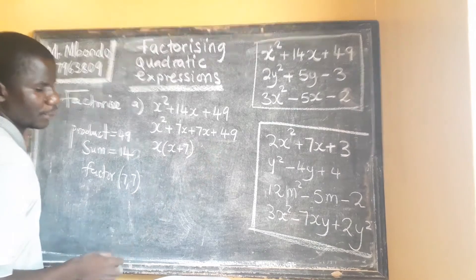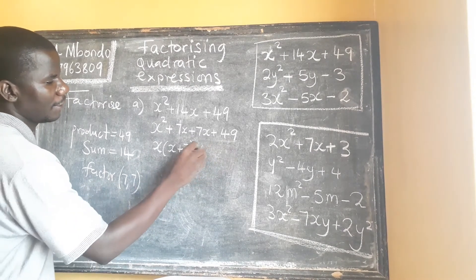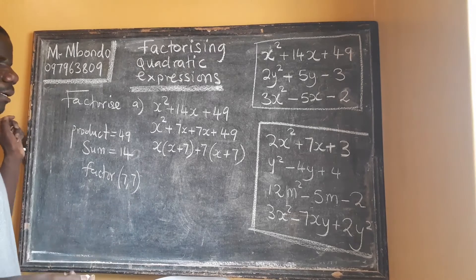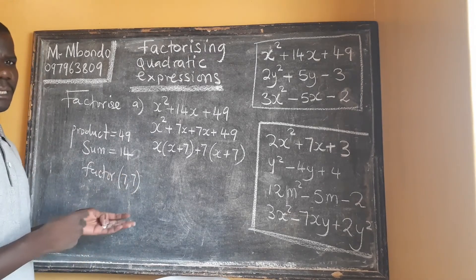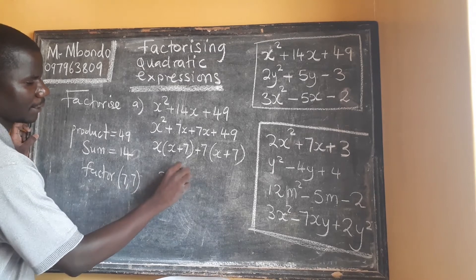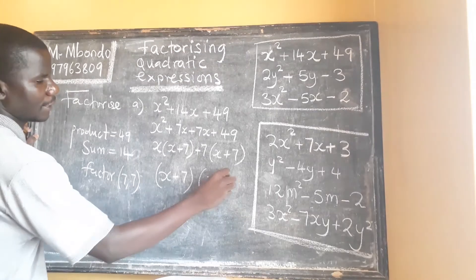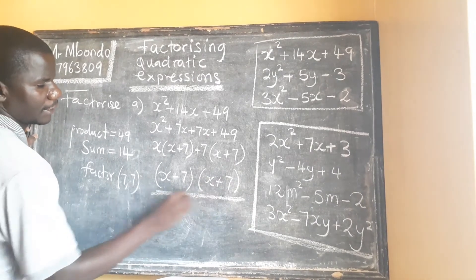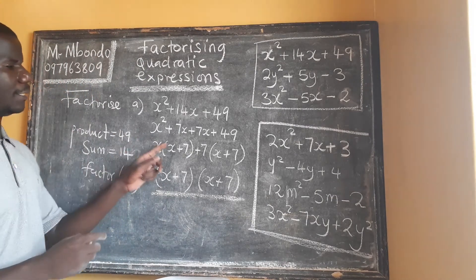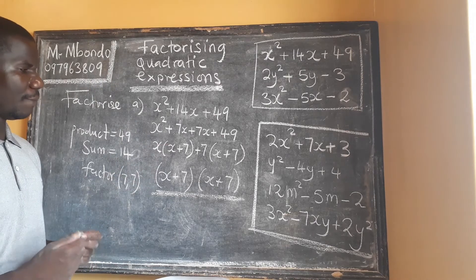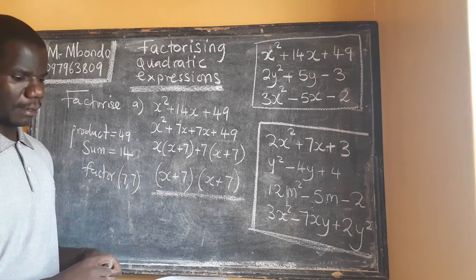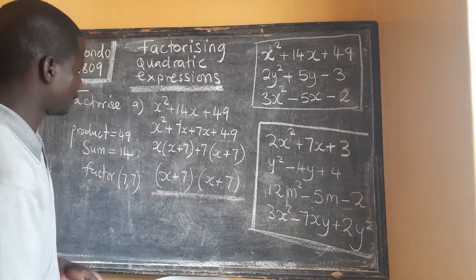Then here when you come to this part, you look at what is common, which is (x + 7). You have (x + 7) again. So finally we write our answer as (x + 7)(x + 7). This is how we factorize the quadratic expression. This is also in the other method of factorization.